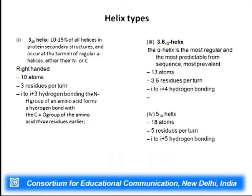There are additional helix types beyond the common 3.6₁₃ alpha helix. The 3₁₀ helix represents 10–15% of all helices and typically occurs at the start or end of a long alpha helix as a transition, with hydrogen bonds between the first and third residue rather than first and fourth. There is also the 5₁₈ alpha helix. These variant helix types are encountered at lower frequencies in protein structures.